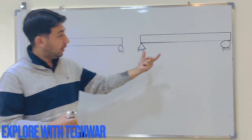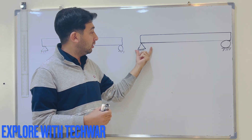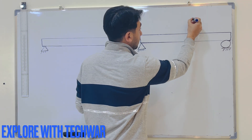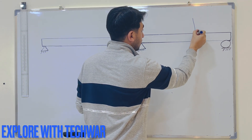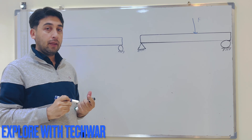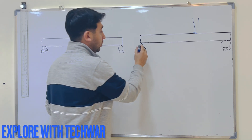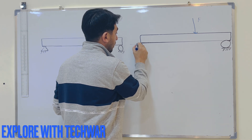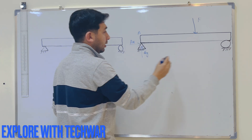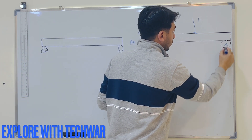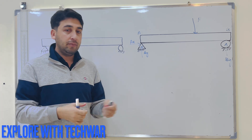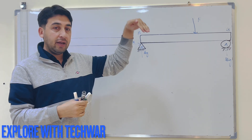We have a beam — it is a simply supported beam. It has a pin support at point A and a roller support at point B. If I apply a force F here at this point, there will be two reaction forces: AY and AX at point A, and BY at point B.